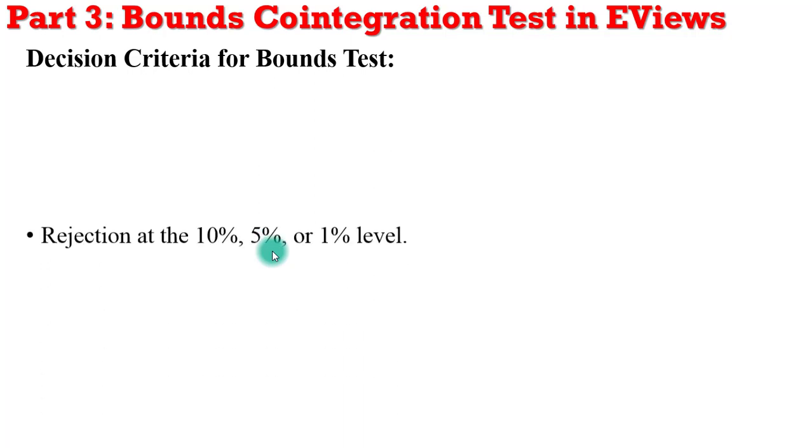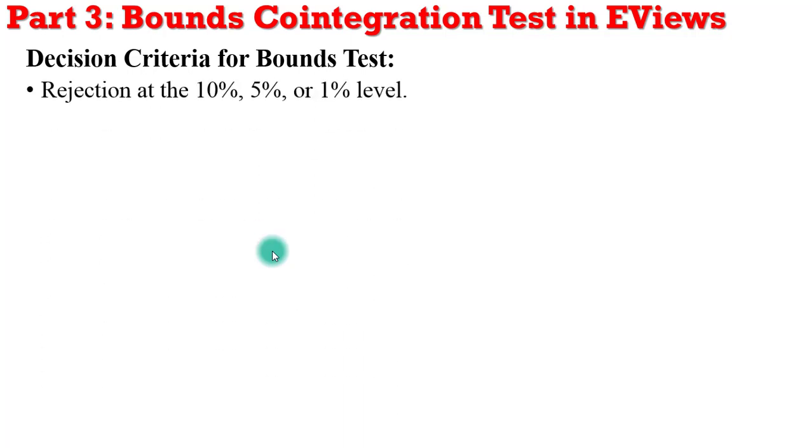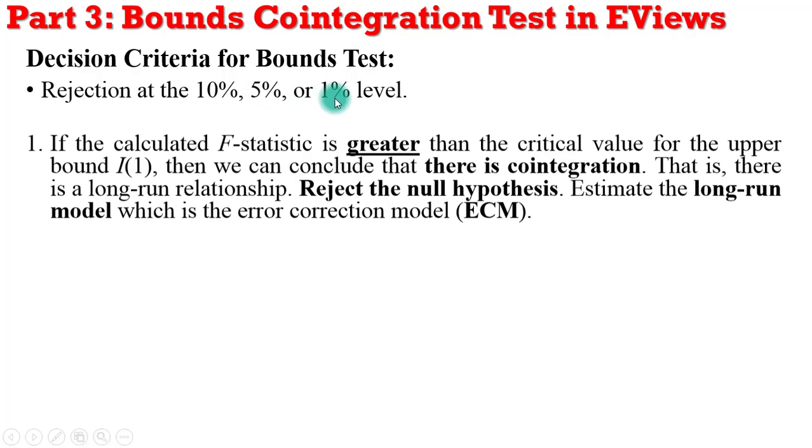What will be the decision criteria for the bounds test? You can reject the null hypothesis of no cointegration, either at the 10%, 5%, or 1% significance level. You can reject the null if the F value is greater than the critical value for the upper bound series. In that situation, we conclude that there is cointegration, there is long-run relationship, so we reject the null hypothesis.